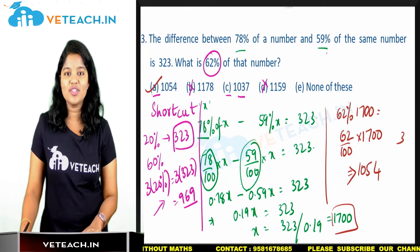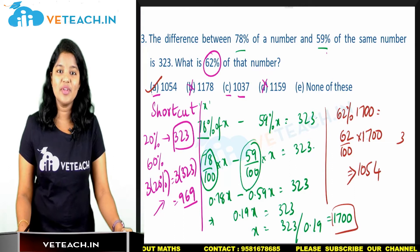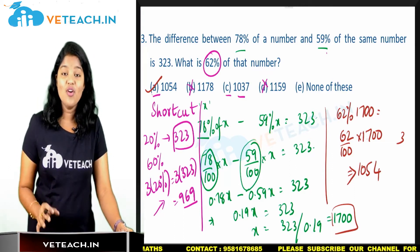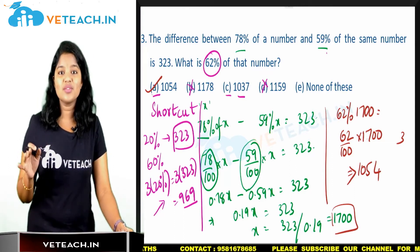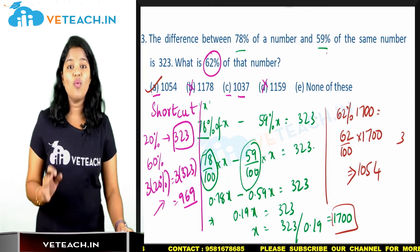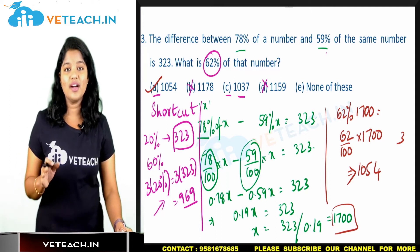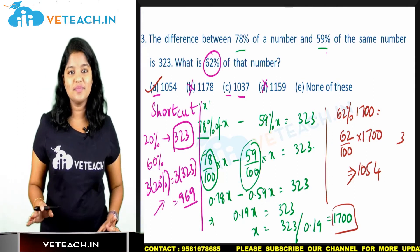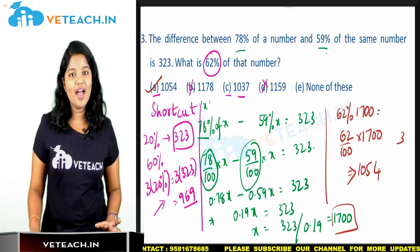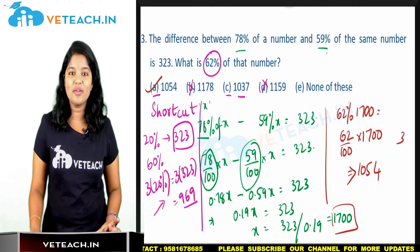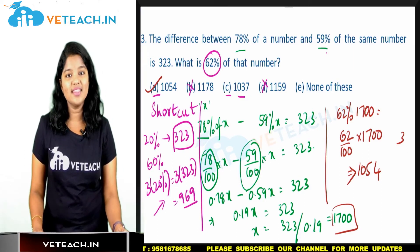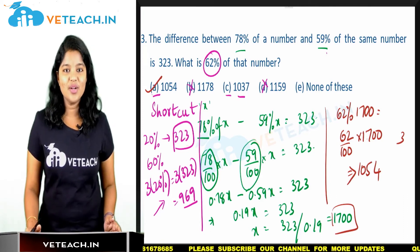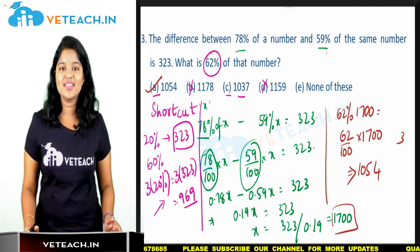For bank clerical examinations with a total of 6000 posts and 40 lakh students applying, you have to take calculated risks to overcome the competition. It doesn't mean blindly ticking answers — have a strategy, take a calculated risk, and you will succeed.